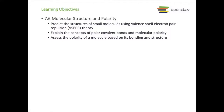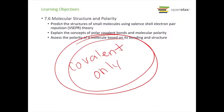Welcome back. We're now on 7.6 molecular structure and polarity. In this section we're going to predict the structures of small molecules using valence shell electron pair repulsion theory, explain the concepts of polar covalent bonds and molecular polarity, and assess the polarity of a molecule based on its bonding and structure. This is all for covalent compounds — we are not talking about ionic compounds in this section.